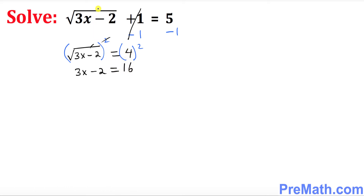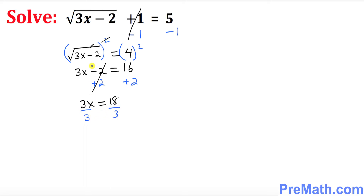Now we want to solve for x. I'm going to add 2 on both sides — the 2 and negative 2 cancel out — giving us 3x equals 18. Dividing both sides by 3, this 3 cancels out, so our solution turns out to be x equals 6.